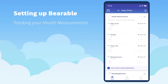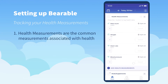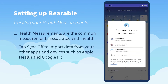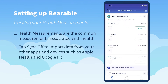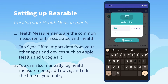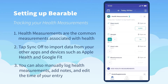Health Measurements is a section mostly used for importing data from third-party apps and devices. You tap the sync off button and connect it to an account such as your Apple Health or Google Fit account. You can also log data manually — here you can see we're tracking weight and adding notes, and this can come in handy if you can't sync certain pieces of information.